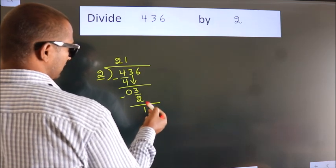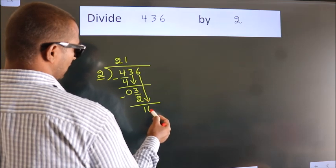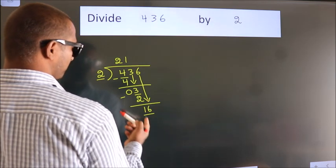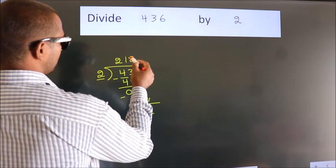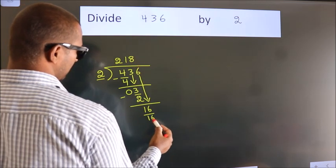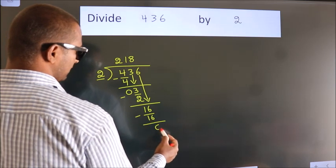After this, bring down the beside number. So 6 down, so 16. When do we get 16? In 2 table, 2 8s, 16. Now we subtract, we get 0.